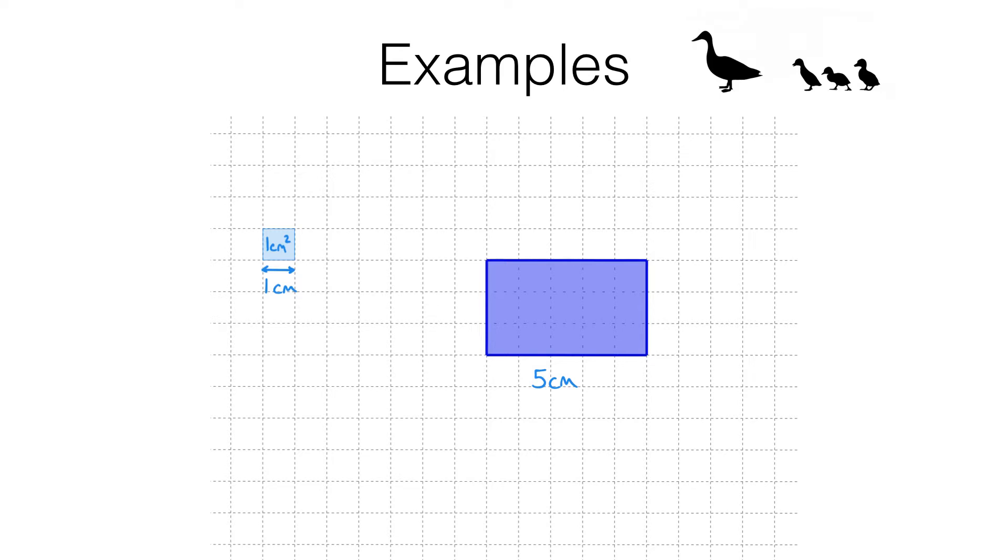You should be familiar with a shortcut you can use when you have rectangles however. Instead of counting squares we can multiply the length by the width. In this case I can find the area by working out five centimetres multiplied by three centimetres which gives me 15 square centimetres.